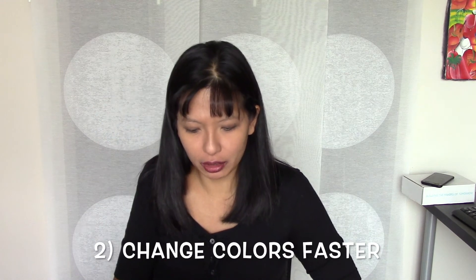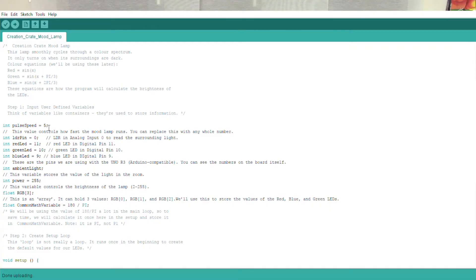Hopefully you can tell it's a little bit brighter now. It looks brighter to me so hopefully I've done exercise one correctly. I've upped the power. That was question one. Now let's move on to question number two. Question number two is make the lamp change colors faster. There's three ways of doing this. The first way is the easiest one: pulse speed equals five.